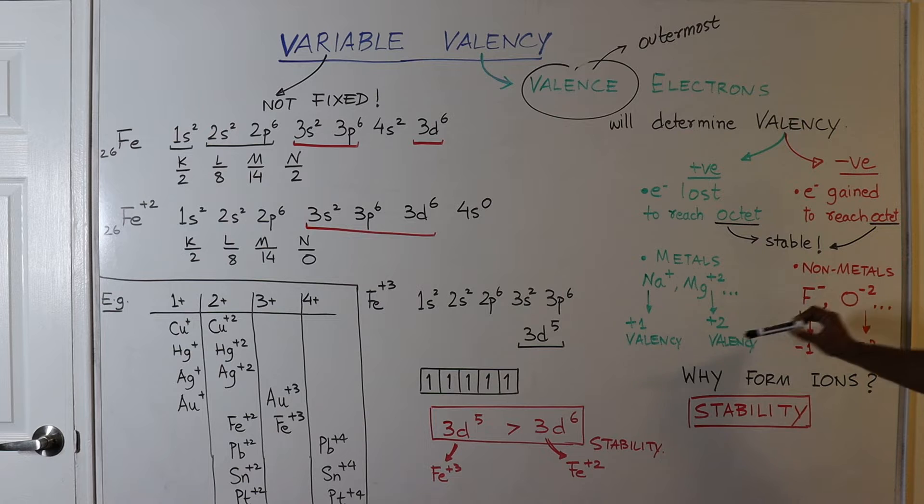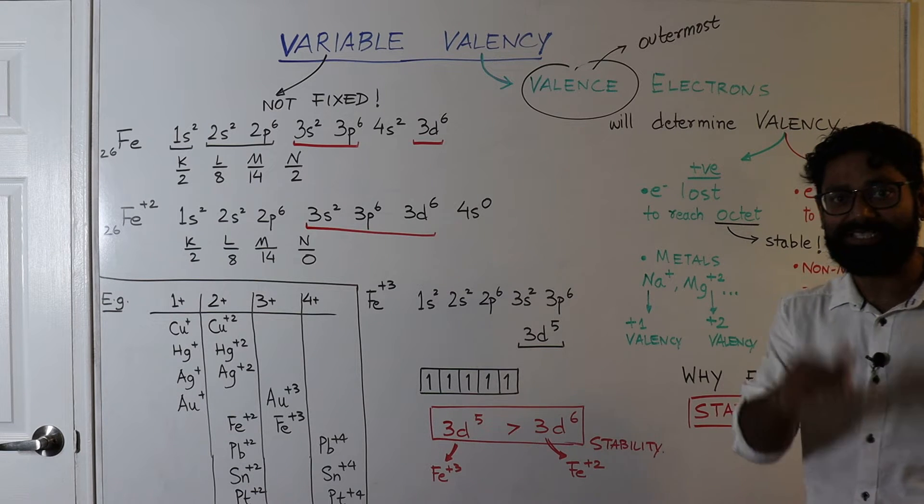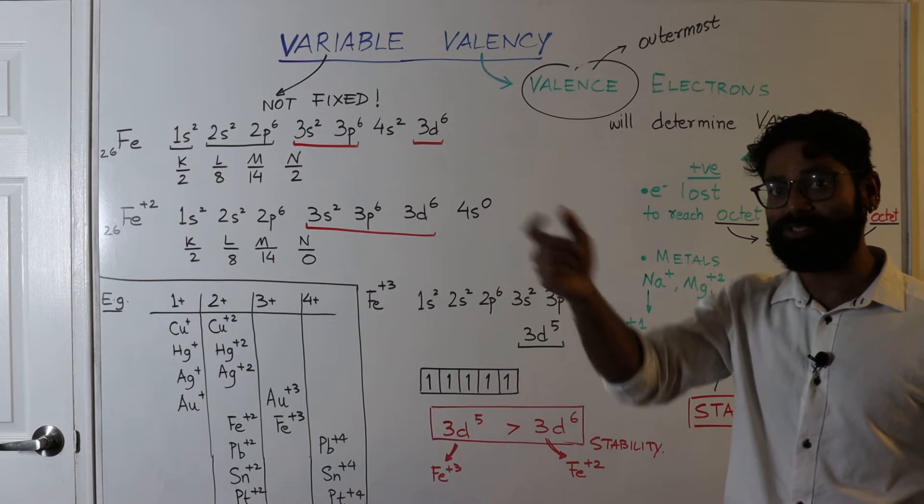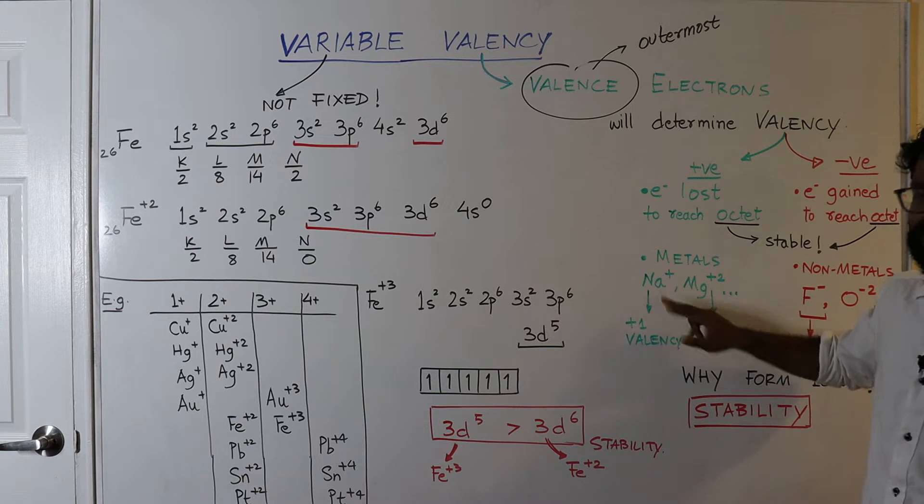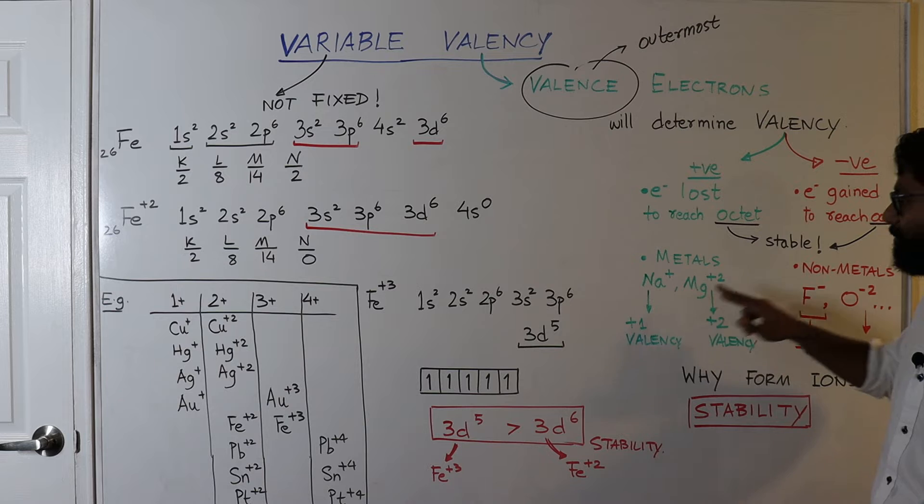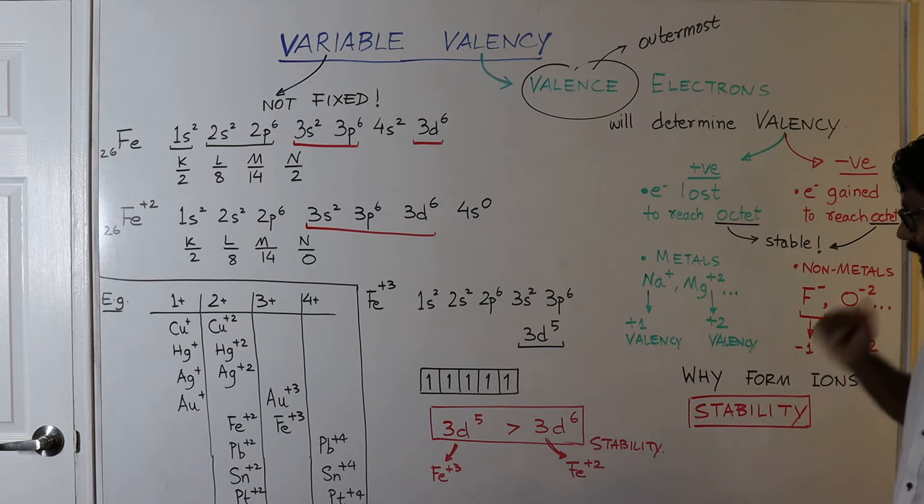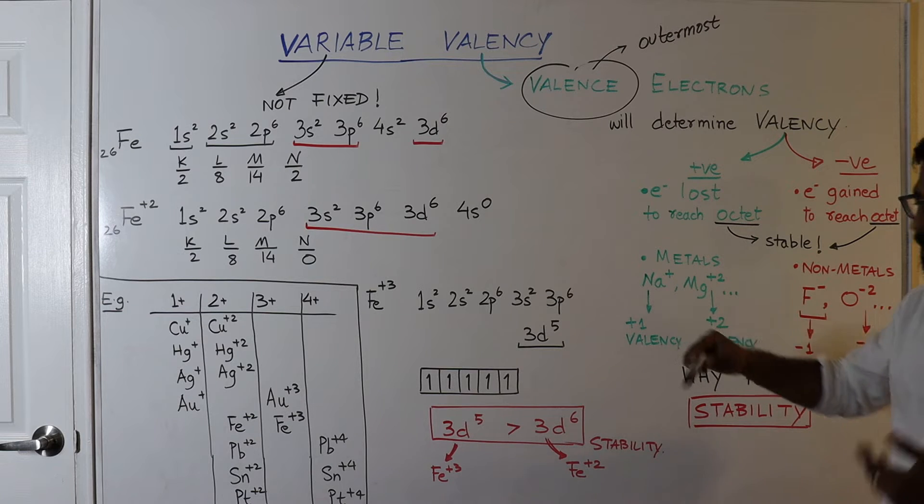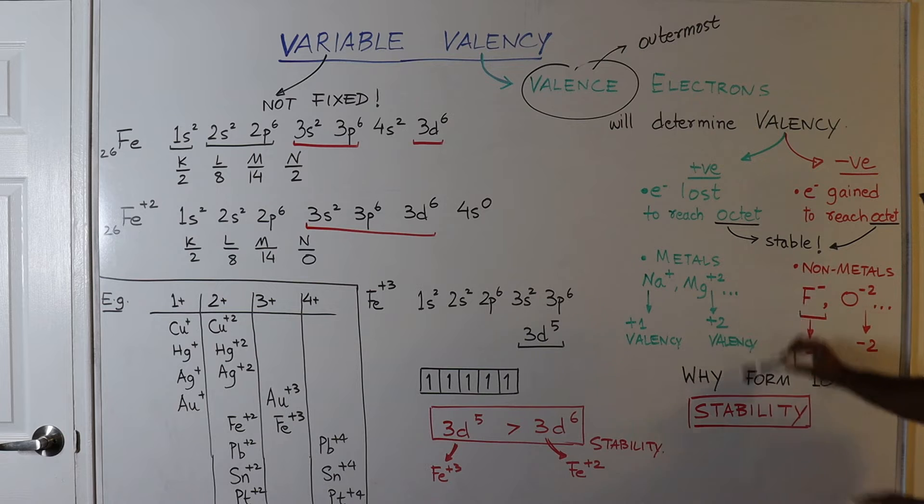Say for example, sodium atom. Now sodium atom's electronic configuration is 2,8,1. Now it will lose one electron from its outermost shell to get to a stable octet, and therefore it becomes Na+. Similarly for magnesium, magnesium loses two electrons to become Mg2+. Now, this plus one is called the valency of the metal sodium. So plus one is the valency of sodium, plus two is the valency of magnesium.